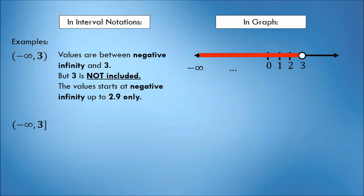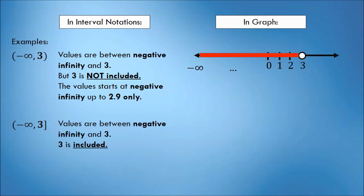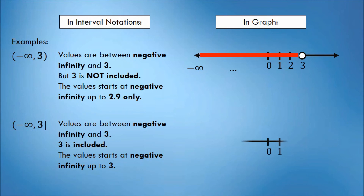Last example with infinity: suppose we have the interval (-∞, 3]. This interval indicates that the values included are between negative infinity and 3, and 3 is included because of the bracket symbol. Meaning, the value starts at negative infinity up to 3. In the graph, we will put a shaded circle on 3 because 3 is included. The solution set is from negative infinity up to 3.